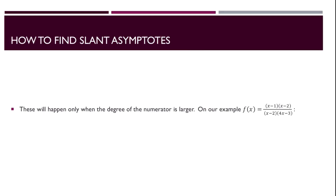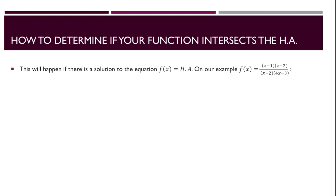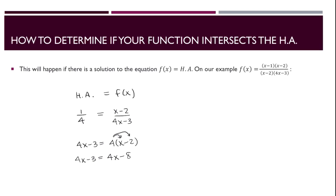Regarding slant asymptotes, note that these only happen when the degree of the numerator is larger. In our example, the degrees are tied, so we have no slant asymptotes. In general, you will not have both a slant and a horizontal asymptote. Next, let's determine if our function crosses the horizontal asymptote by setting our function equal to 1/4 and solving. Using cross multiplication, we get 4x minus 3 equals 4 times x minus 1, which distributes to 4x minus 3 equals 4x minus 4. Subtracting 4x from each side leaves negative 3 equals negative 4 — no solution. So we have no intersection with the horizontal asymptote.